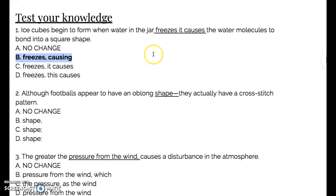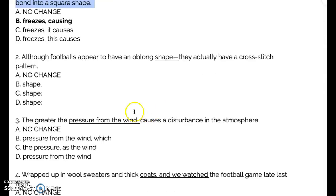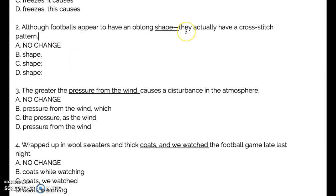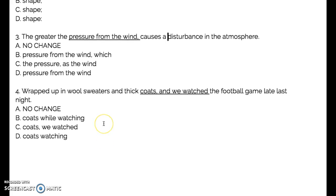The best answer for question one is B — 'freezes, causing the water and molecules to form into oval shapes.' The reason is that you have two independent clauses as set up, and the best fix is to change 'freezes' to 'freezing,' making this a dependent clause. For question two, 'although all the footballs appear to have an oblong shape, they actually have a cross-stitch pattern' — the answer is B: the dependent clause comes first, then the independent clause, separated by a comma. For question three, 'the greater the pressure from the wind causes the disturbance in the atmosphere' — the answer is D: 'the greater the pressure from the wind' and 'causes the disturbance' are two dependent clauses and should not be separated with a comma.